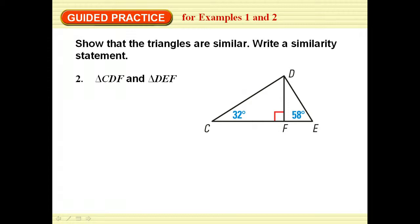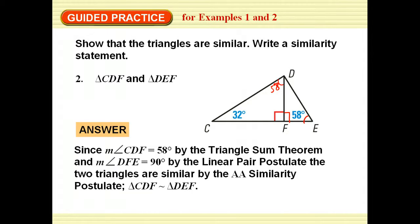Show that these are similar. CDF is this larger triangle and DEF is this one. I know that this is 90 degrees, so that makes that 90 degrees. If this is 90 and that's 32 for this one, that would leave 58, which matches this angle and this one. Therefore, I've got angle-angle similarity. Once again, it's just making sure that we have two corresponding angles that are congruent.